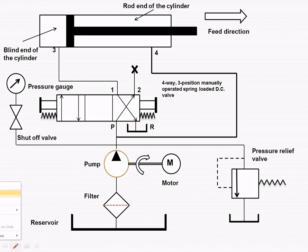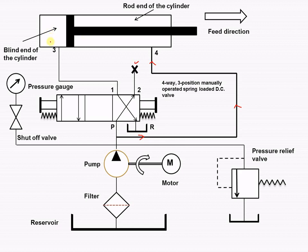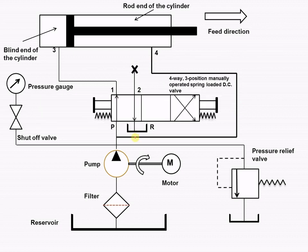As this is the block position, the fluid will enter into the rod end of the cylinder and will cause the backward motion of the piston rod of the cylinder. The liquid from the blind end of the cylinder from port 3 will go to the reservoir, as shown here.